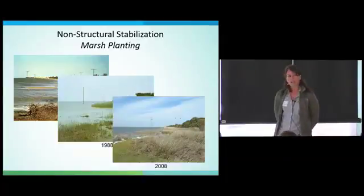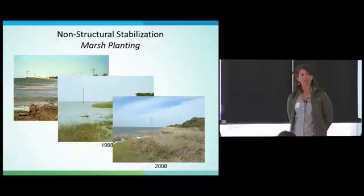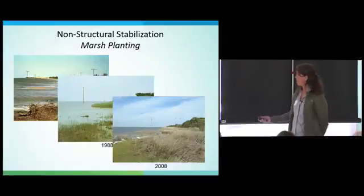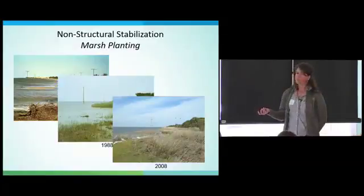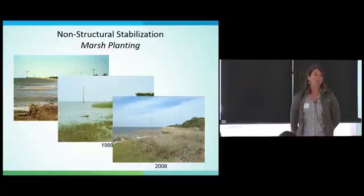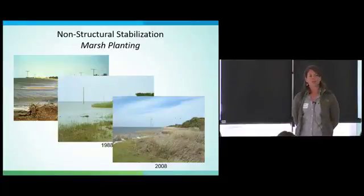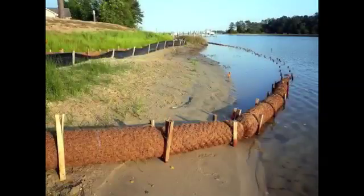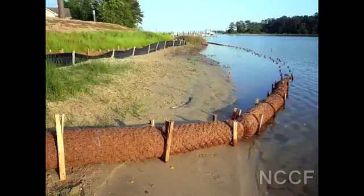If slopes and elevation are not adequate for marsh plantings alone, you can consider regrading or bringing in sediment and fill. However, there is concern with bringing in fill due to the possible introduction of invasive species, so working with native sediment as much as possible is always best. Bio logs, made of natural fibers, are an option for areas with low wave energy.